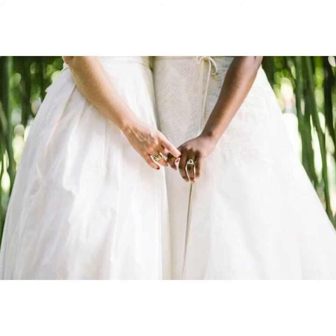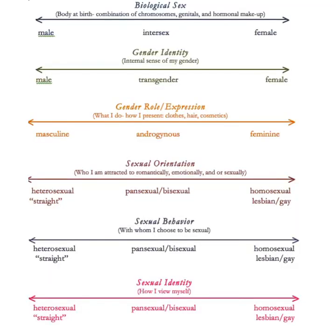There are at least 46 different terms that are currently being used to describe orientations, behaviors, and attraction for anyone on the spectrum. On this chart, it does a pretty good job at illustrating the spectrums for sexual identity, sexual behavior, and sexual orientation. It also adds gender roles and expressions, so you can identify as masculine, androgynous, or feminine.